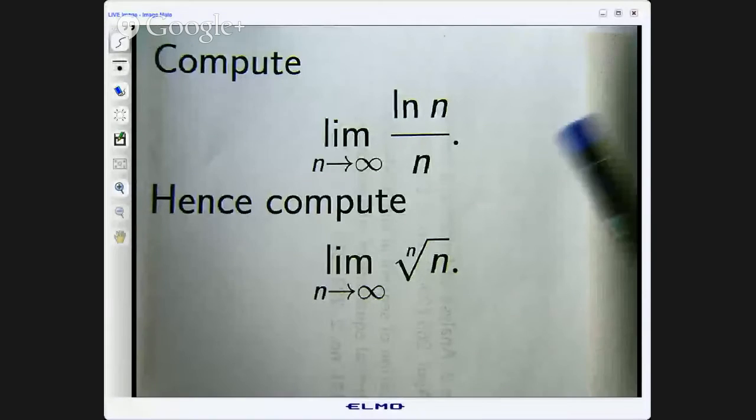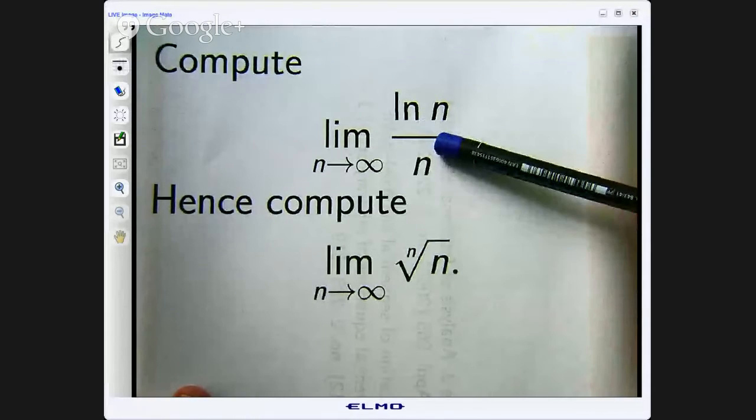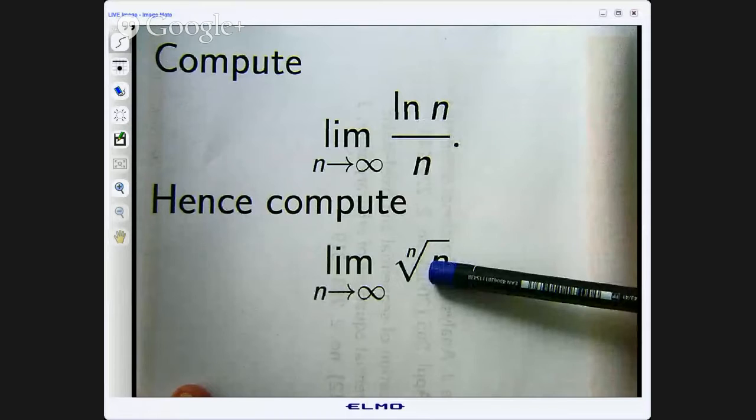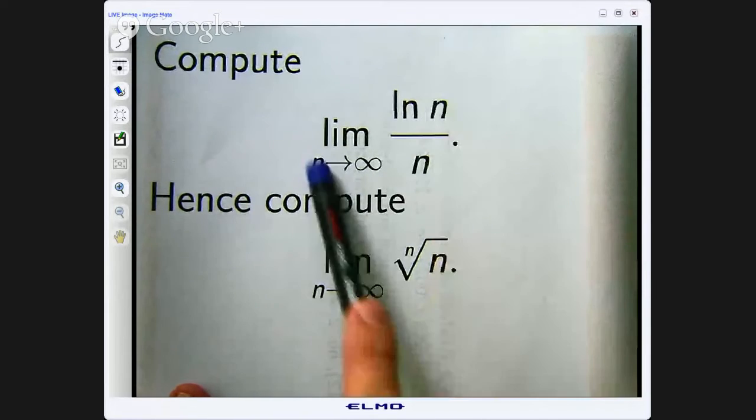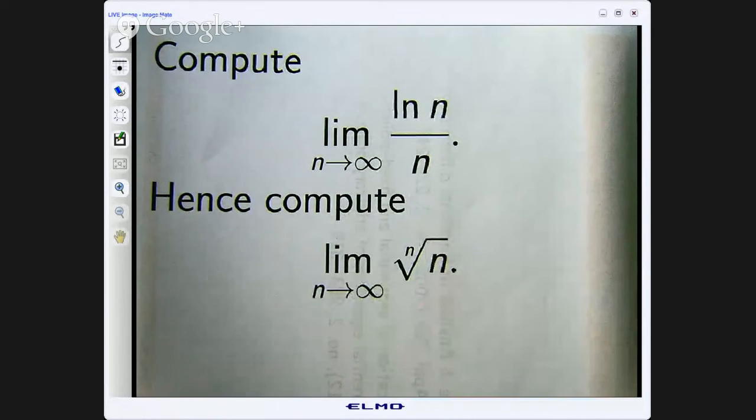Okay, so this is the first limit we are going to look at and this is the second limit. Now here we are talking about sequences so n is a natural number 1, 2, 3, 4, 5, 6, 7, etc.